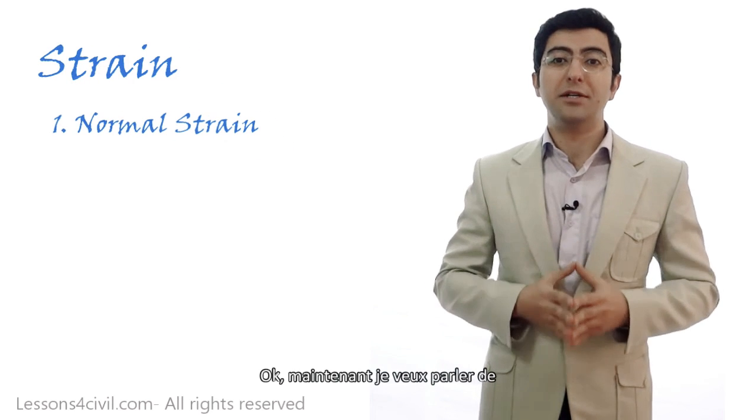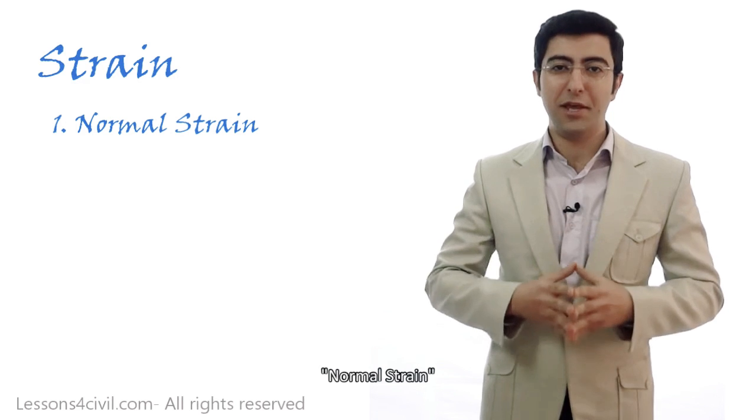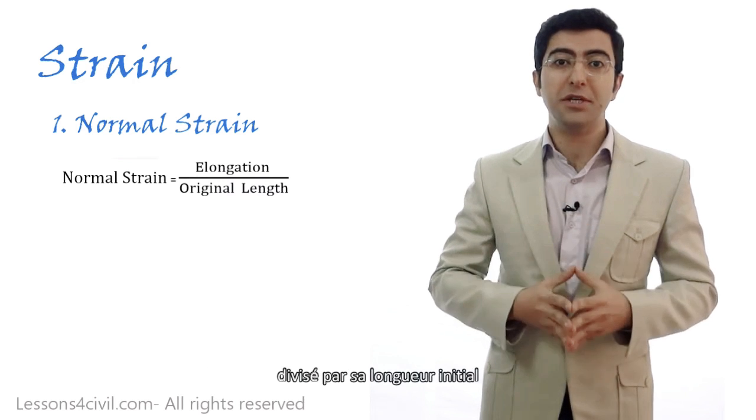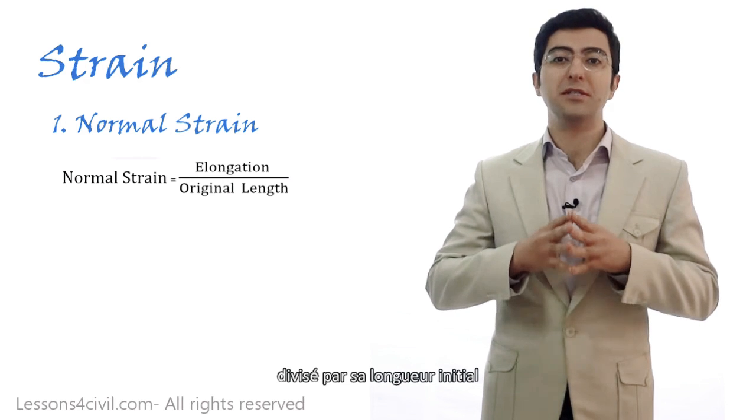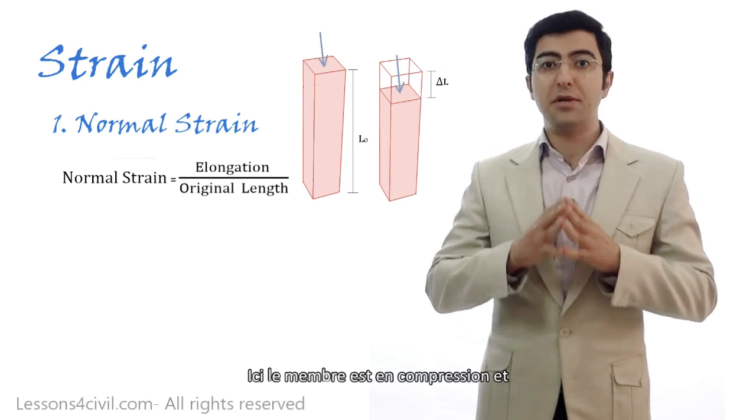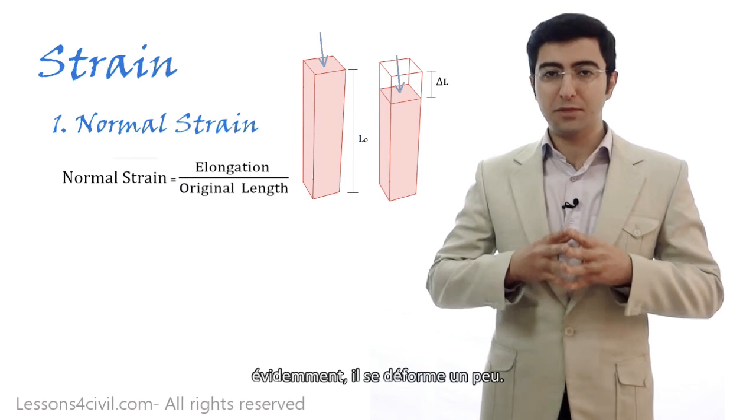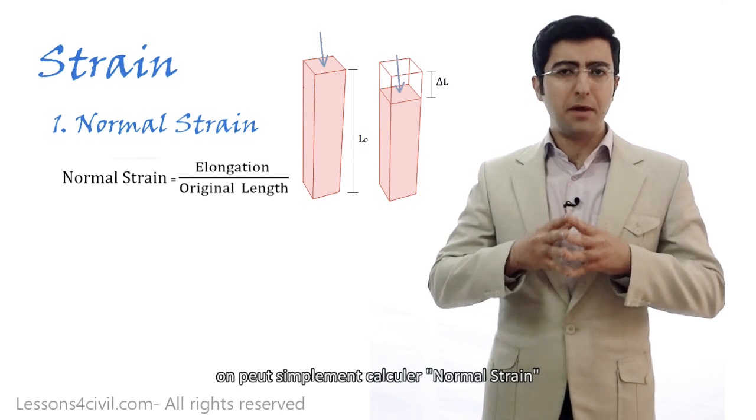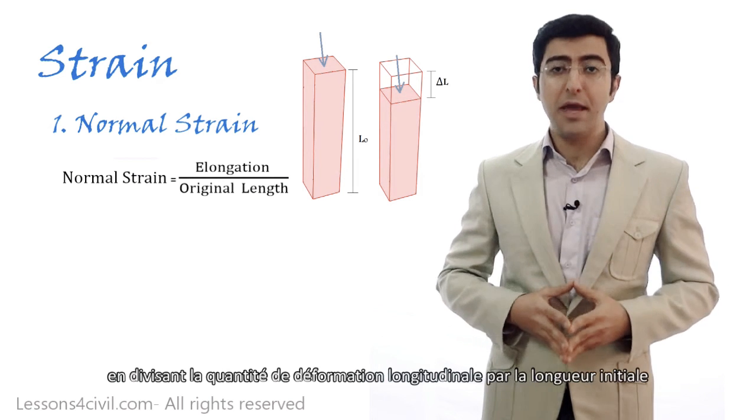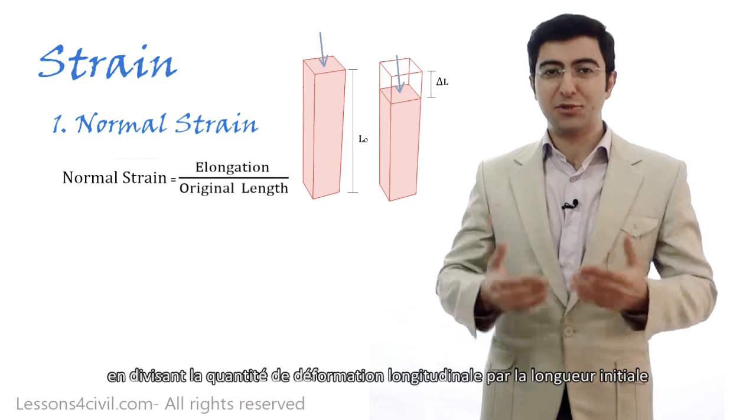Now it's time to learn about normal strain. Normal strain is the ratio of deformation divided by the original length of the member. In this picture, for example, the member is under compression. So it deforms a bit. The amount of this deformation divided by the initial length of the member is the amount of normal strain.